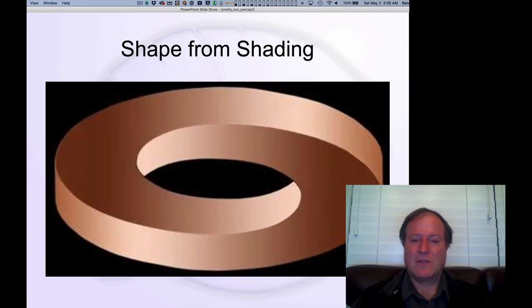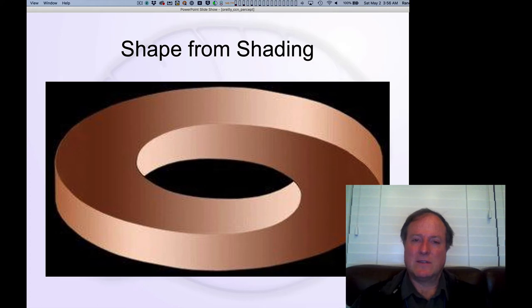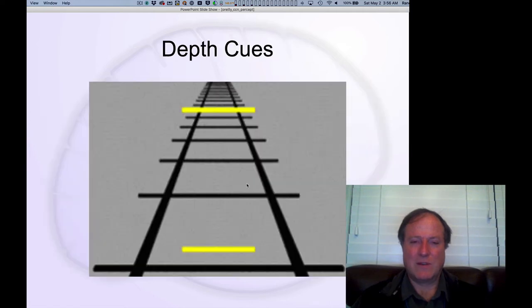Now, we also have a lot of 2D cues to depth beyond just the stereoscopic binocular sources of depth. And so this is a classic example of how we see depth from shading. This is also an Escher-esque impossible figure, which is fun.